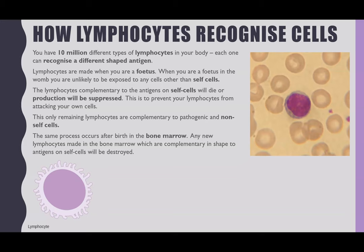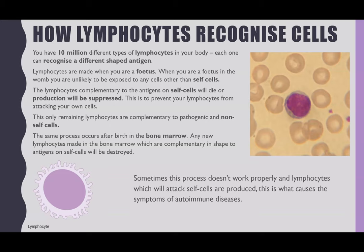This process does actually continue after birth. You will still make new lymphocytes, but this continues to happen in the bone marrow. In the bone marrow, lymphocytes are only really going to be exposed to self-cells, and if they are complementary in shape to those self-cells, they'll be destroyed. Any lymphocytes which are not complementary in shape to the self-cells will then go on to mature in the thymus or in the bone marrow. This process doesn't always work, and that can result in lymphocytes attacking your own self-cells — which is what causes the symptoms of autoimmune diseases. So autoimmune refers to your lymphocytes recognising and attacking self-cells because self-complementary lymphocytes were not properly destroyed or suppressed.